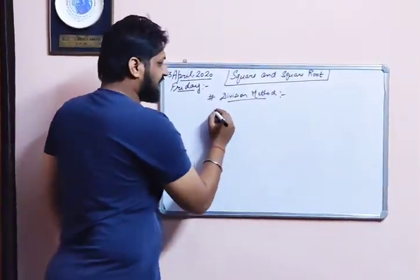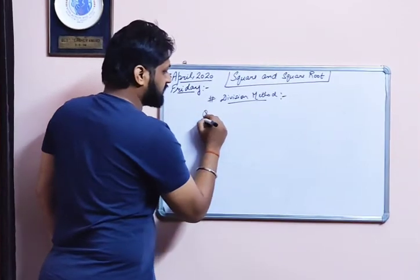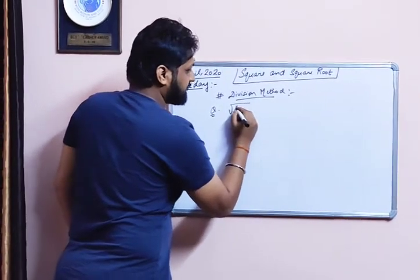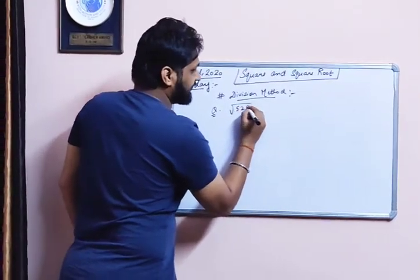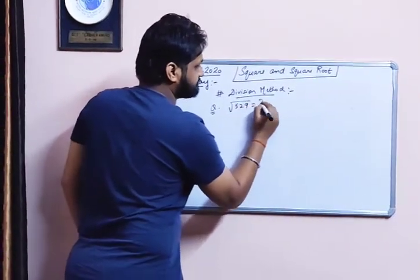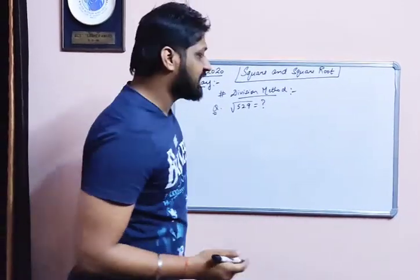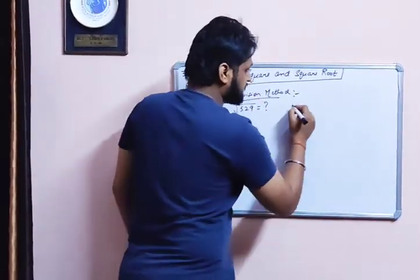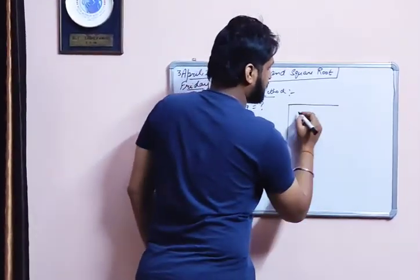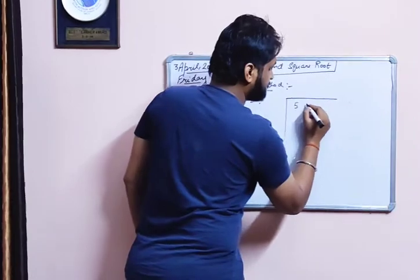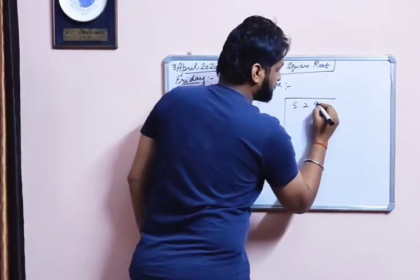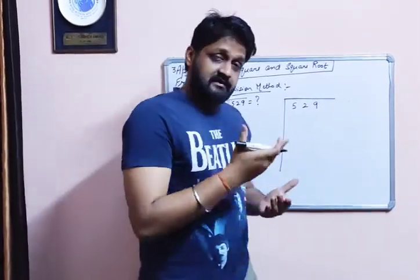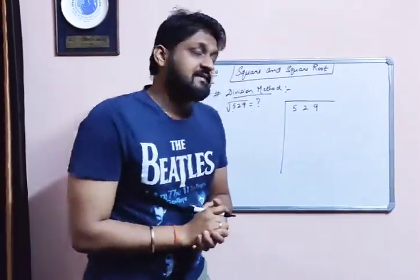So let's assume we have to find the square root of 529. The number is 529 — see this method. This is how we have to do it. We have to write it like this and now see this step by step.